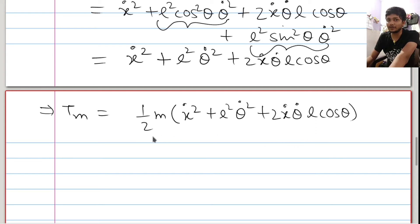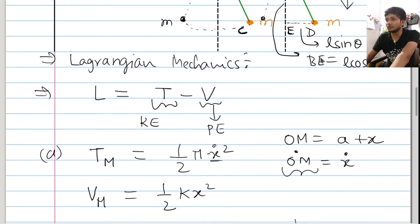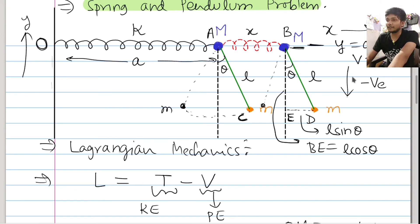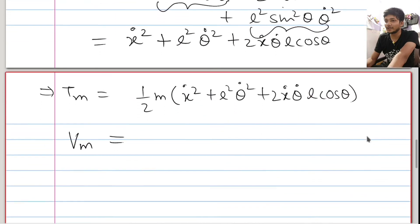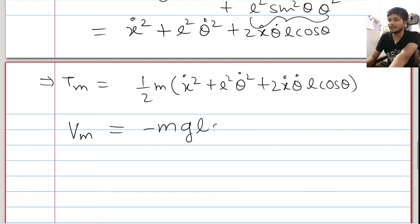So the kinetic energy for small m is: half m times (x-dot squared + L squared theta-dot squared + 2 x-dot theta-dot L cos theta). Now we need to find the potential energy for small m. Since at y equals zero the potential energy is zero, and moving downward decreases gravitational potential energy, the potential energy of small m will be minus m g L cos theta.